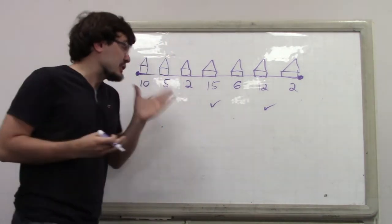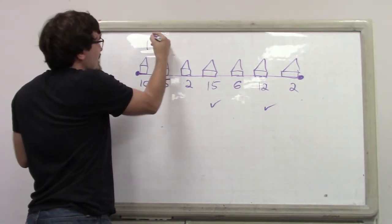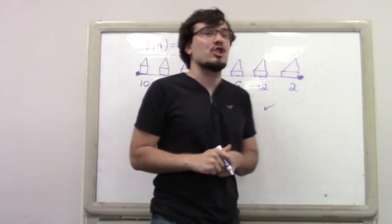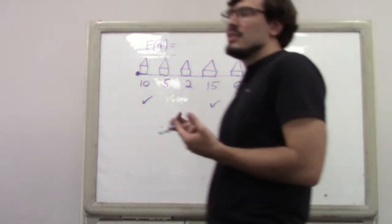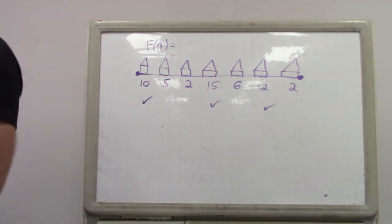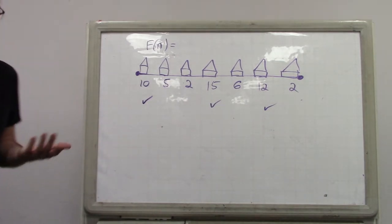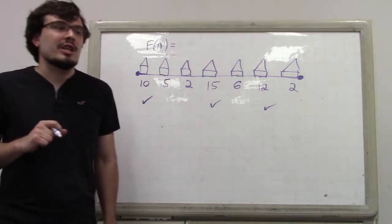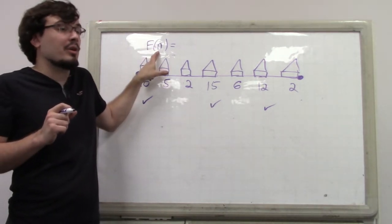First we must ask: what is the recursive formula here? This is general advice for recursive formulas — write the general case first. The base cases are important for actual implementation, but they usually don't affect your understanding of the problem. Ask yourself what the general formula is first. What kind of recursive function is this? What is the parameter — what value are we going to pass into the function?